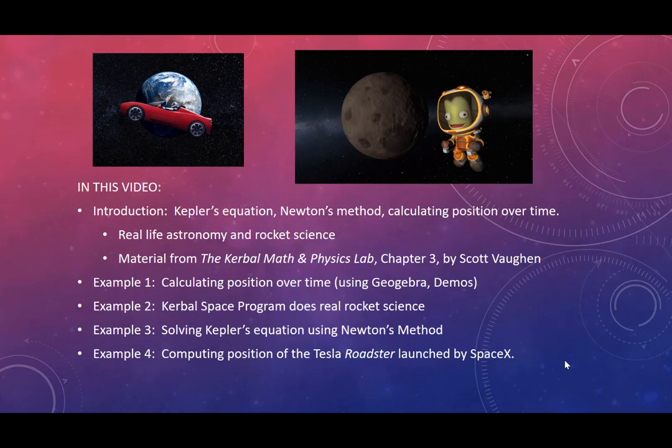Then we'll go through Example 1: calculating position over time in elliptical orbits, using GeoGebra and Desmos to illustrate those calculations. Example 2: we'll use Kerbal Space Program to do real rocket science and see how it's modeled. Then Example 3: we'll actually solve Kepler's equation with Newton's method — the center of what this video is. And Example 4: we'll compute the position of the Tesla Roadster launched by SpaceX in 2018.